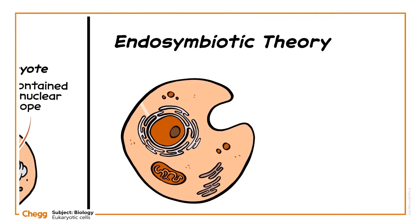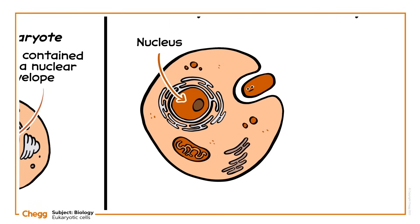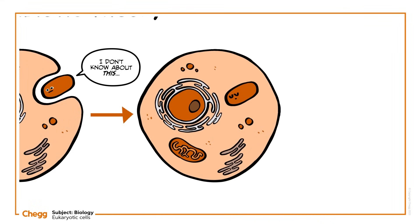First, enfoldings in the plasma membrane of a prokaryote gave rise to a nucleus. Then, a large amoeba-like prokaryotic cell engulfed a smaller prokaryotic cell capable of aerobic respiration. The smaller cell was not digested, and instead it developed a symbiotic relationship with its new host. Living inside its host, it lost the cell wall it no longer needed and, over time, became a mitochondrion.